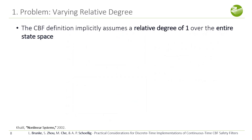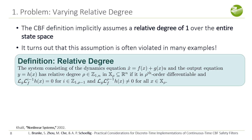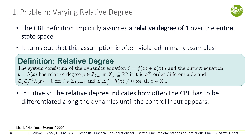So why is this happening? The first problem is caused by the relative degree of the system. The CBF definition assumes a relative degree of one over the entire state space, but this assumption is often violated in many examples. Intuitively, the relative degree indicates the number of times the CBF has to be differentiated along the dynamics until the control input appears.